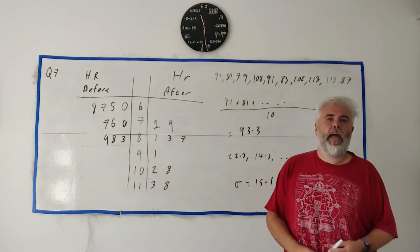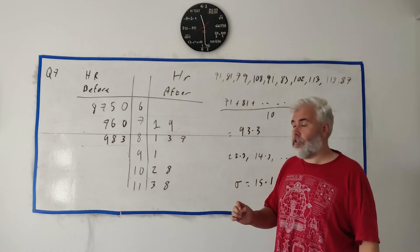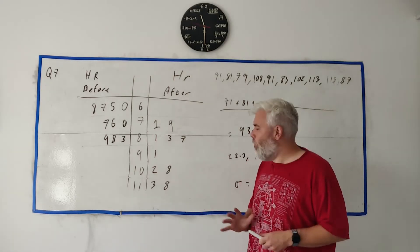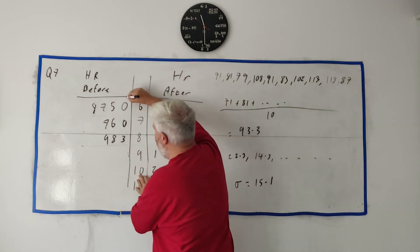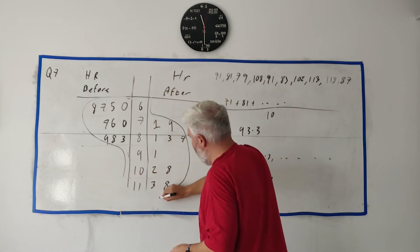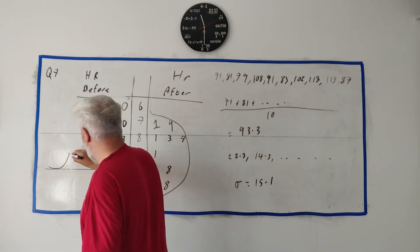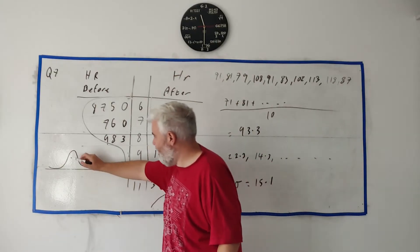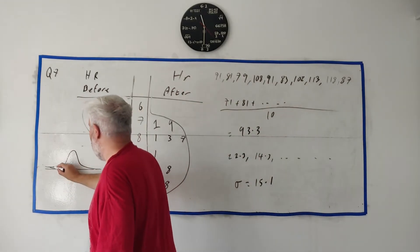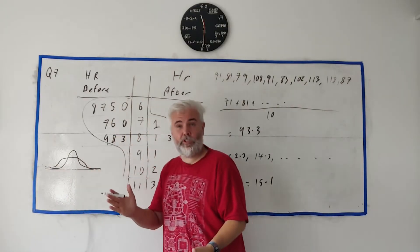Part 3 asks: based on your stem and leaf graph, how has the standard deviation changed from before exercise to after exercise? The answer is it has increased. You can tell because the before exercise data is compact — basically three rows — whereas the after exercise data stretches out much further, going five rows long. If you tilt both sides on their sides, the after exercise distribution is clearly much wider.